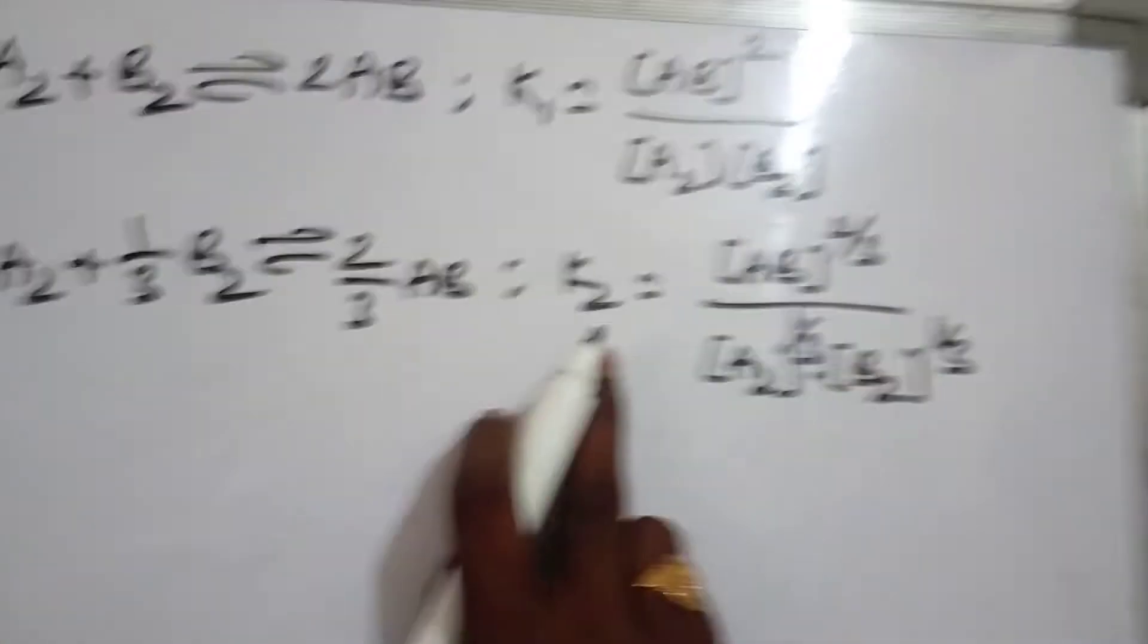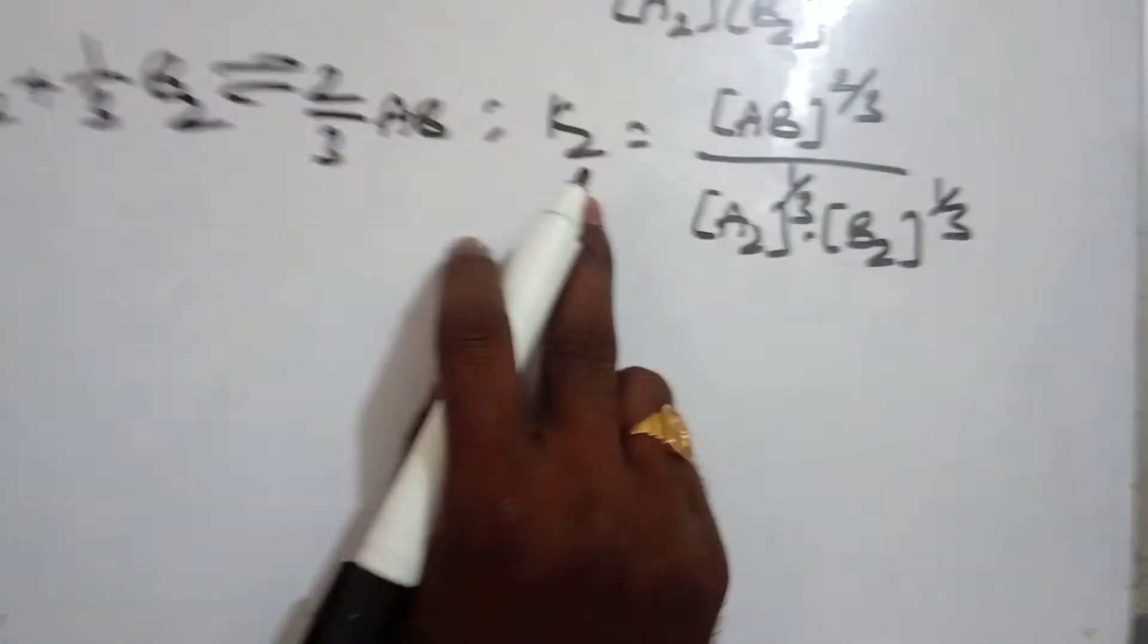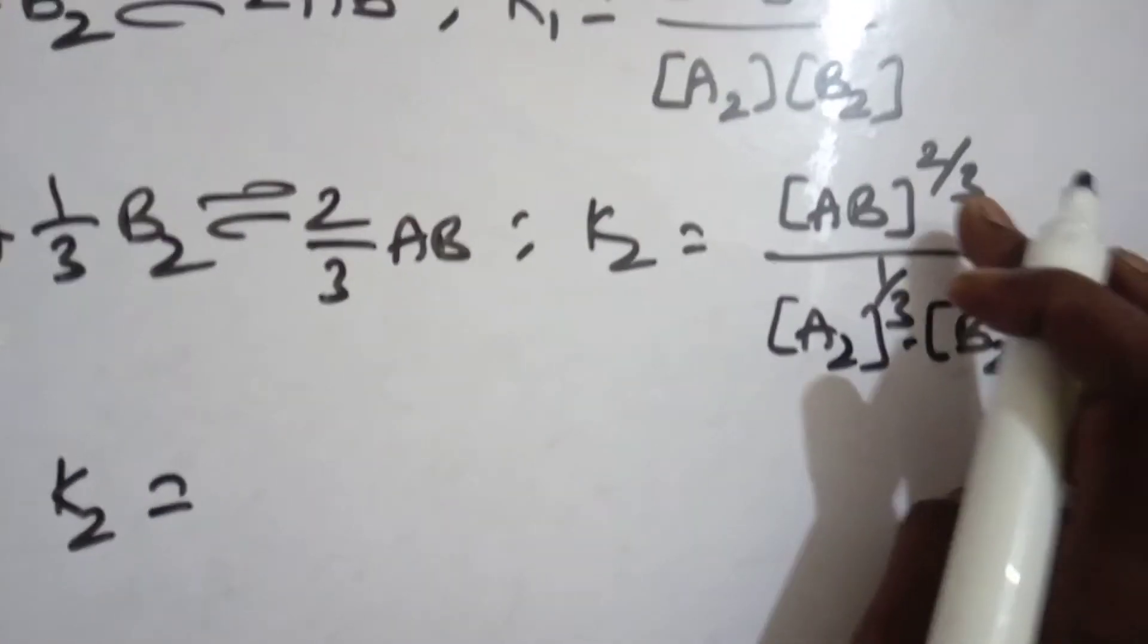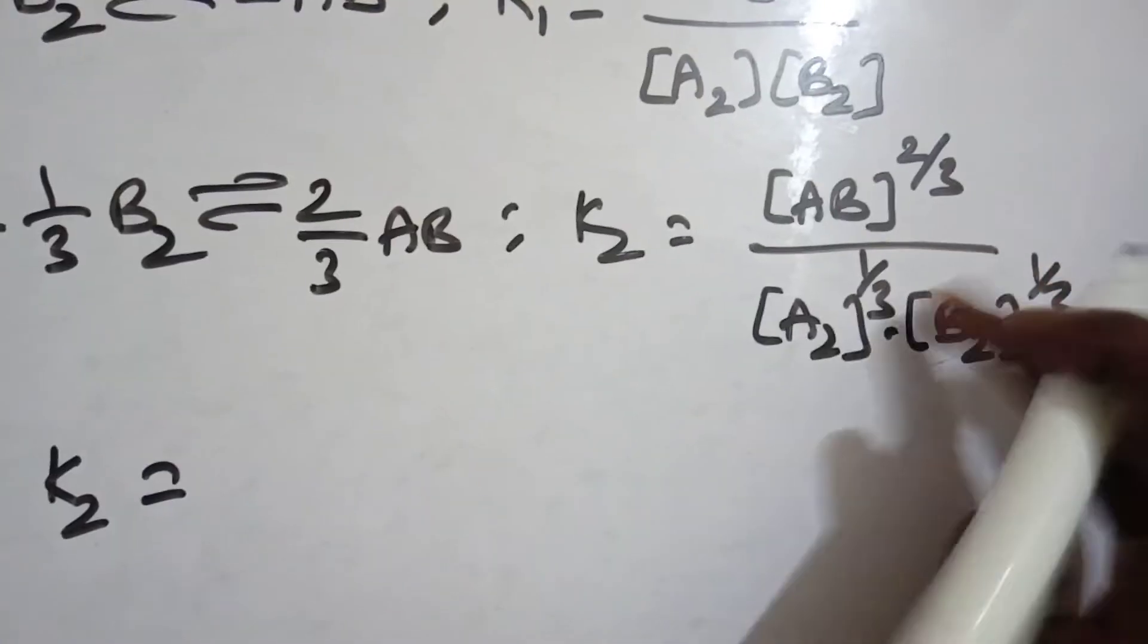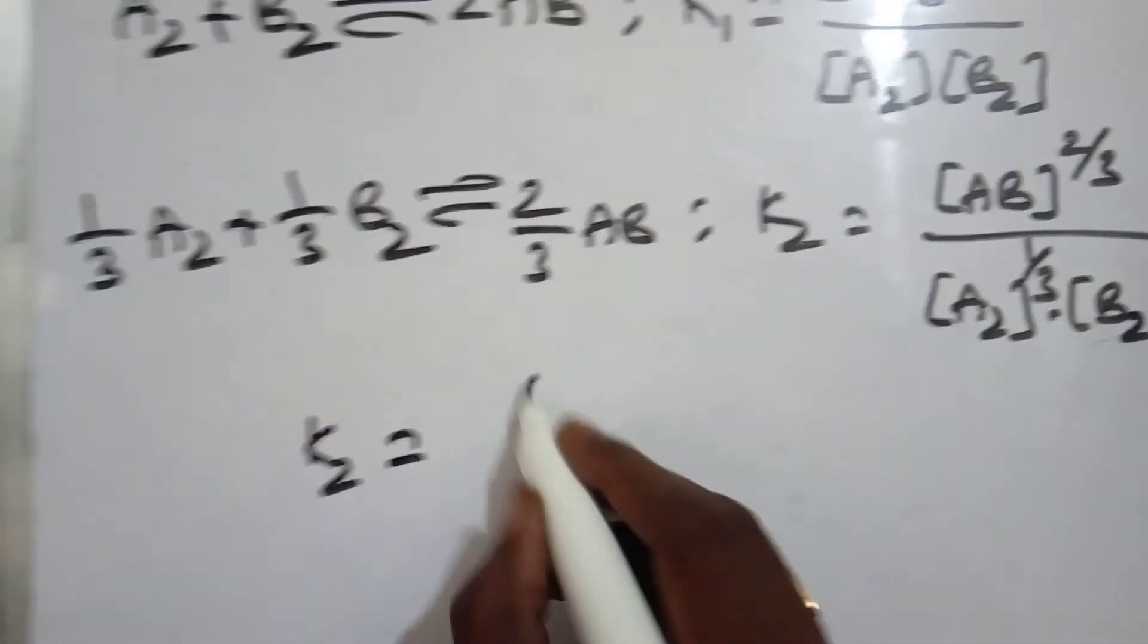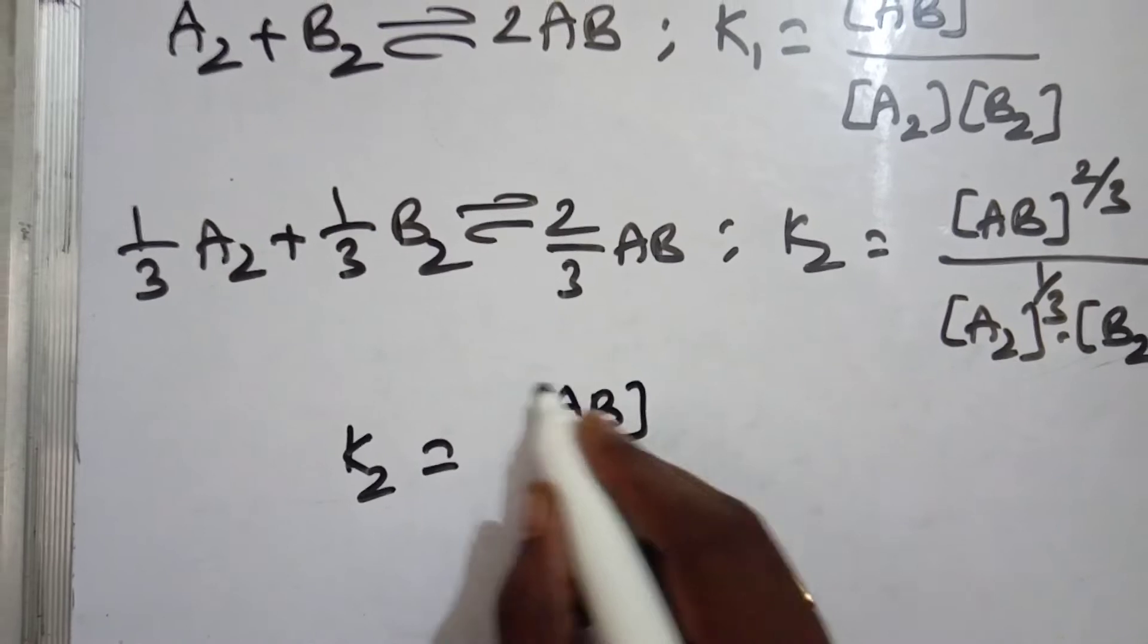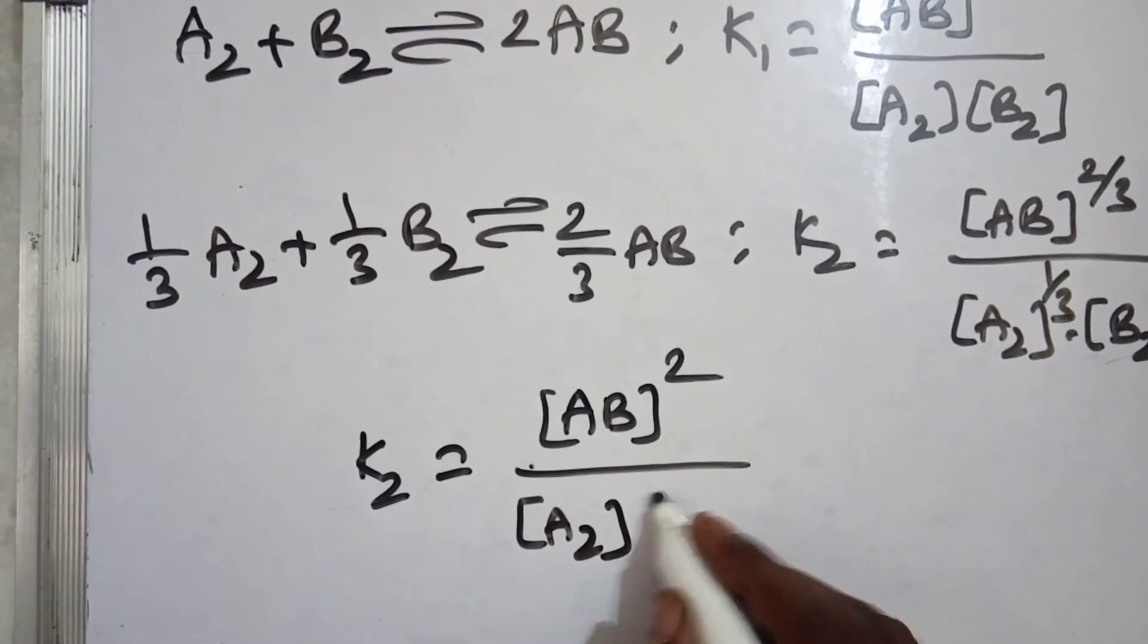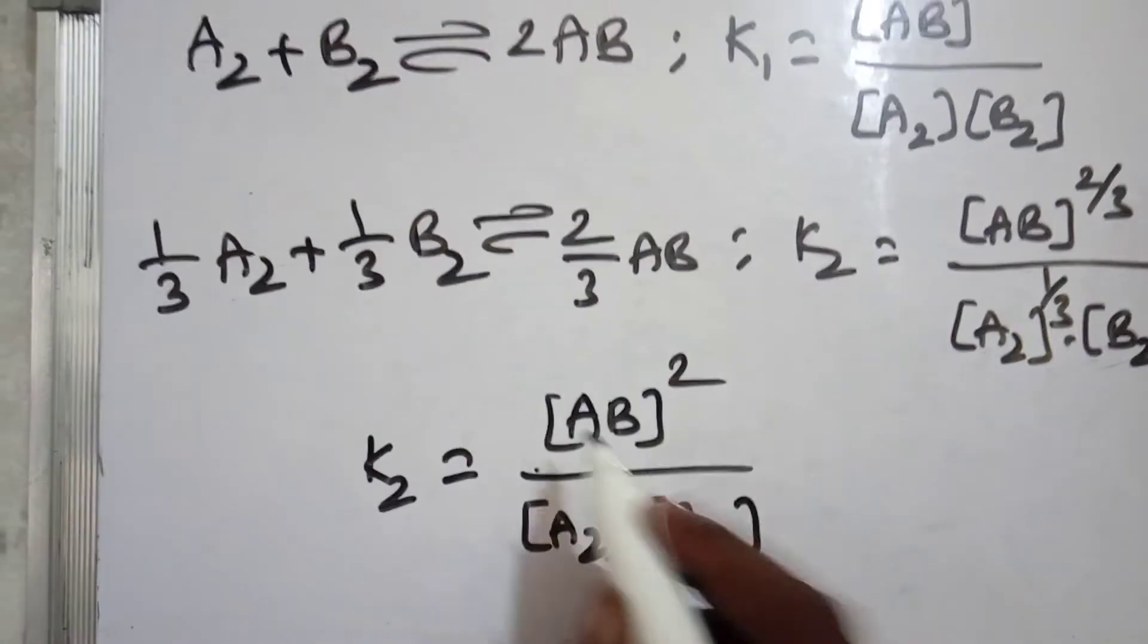So equation K2, K2 is equals to power 1 by 3, AB square by A2 into B2.